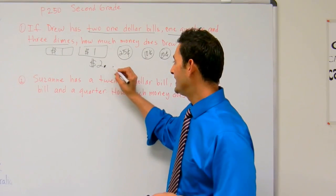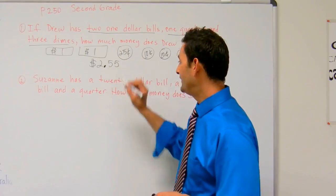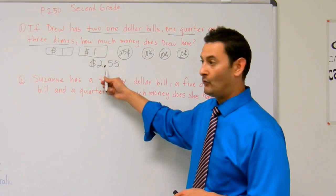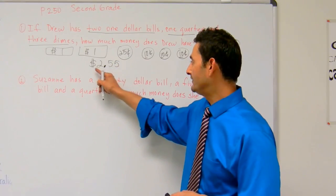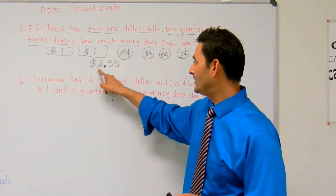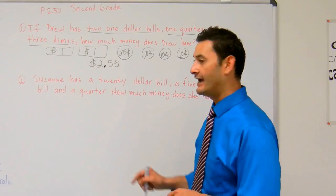So he's got two dollars and fifty-five cents. We always write a decimal point, this dot, in between the dollar and the cents. So here we have a decimal point, which means two dollars and fifty-five cents.